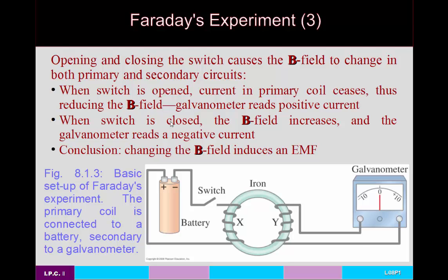When the switch is opened, the magnetic field is reduced, and the galvanometer reads a positive current. When the switch is first closed, the magnetic field increases and the galvanometer reads a negative current, which means the current has reversed directions and hence any magnetic field produced by this coil will also have reversed directions. The conclusion is that by changing the magnetic field, an EMF and hence a current are induced in the secondary coil.